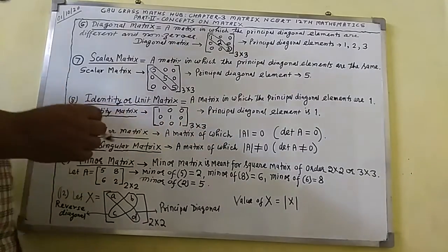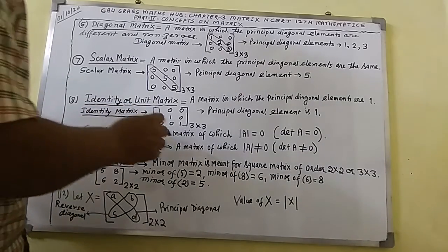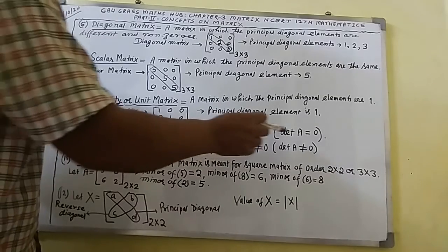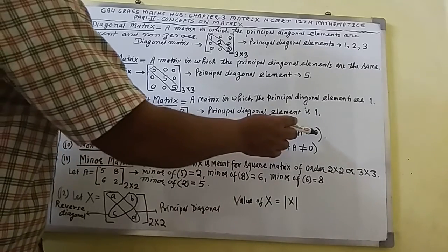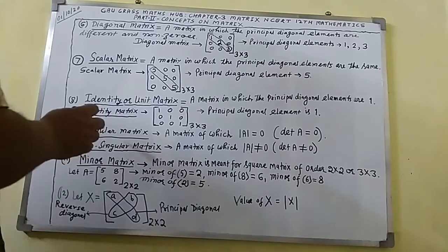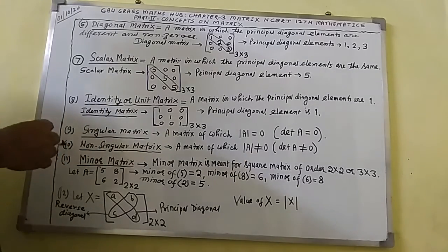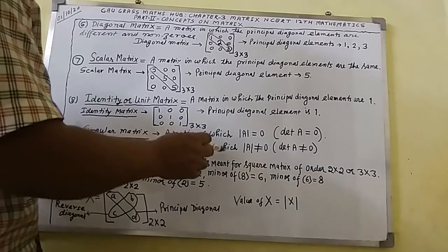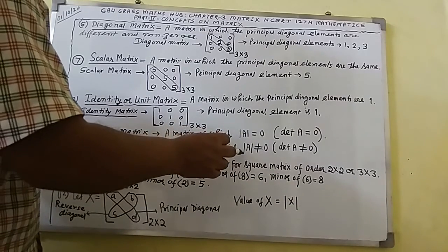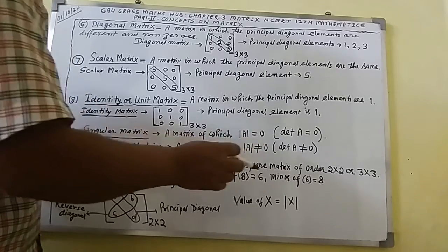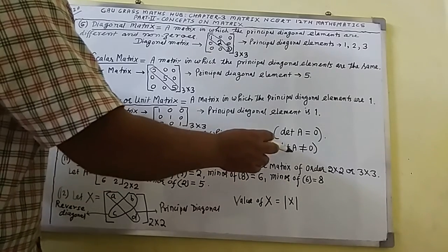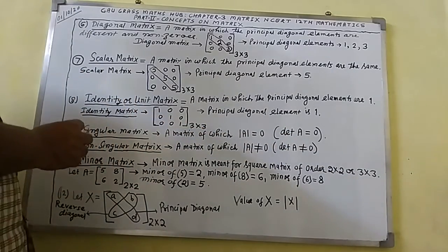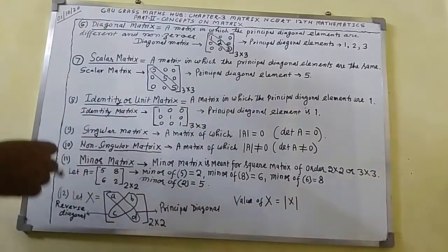For now, you must know that a matrix of which the determinant of A equals 0 is called a singular matrix. Point number 10: non-singular matrix. A matrix of which the determinant is not equal to 0 — that matrix is known as a non-singular matrix.